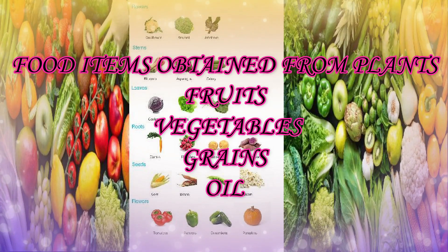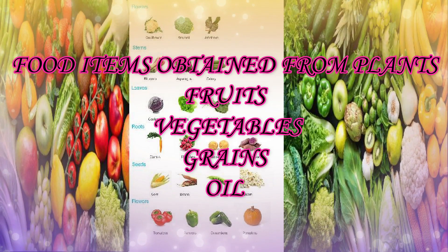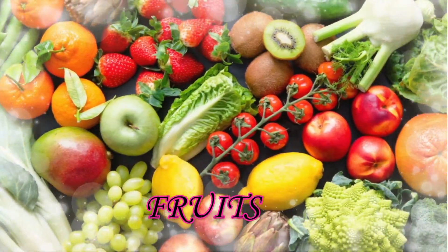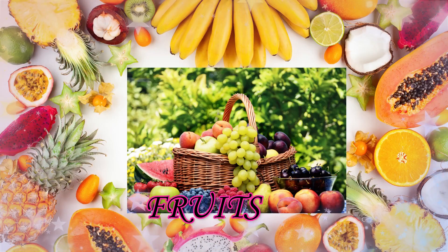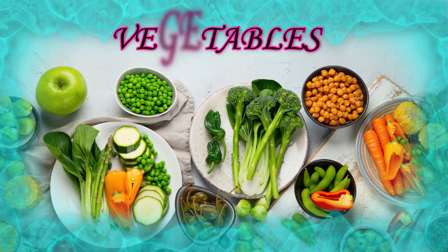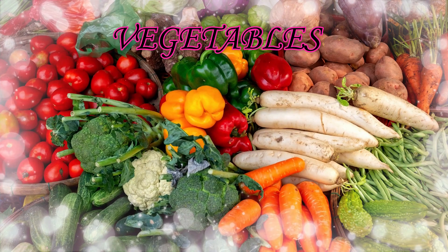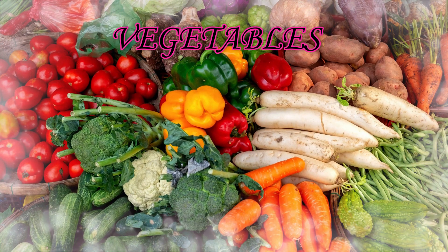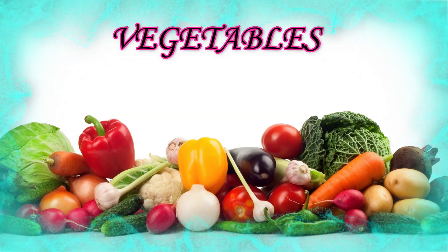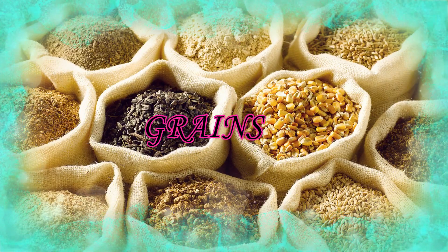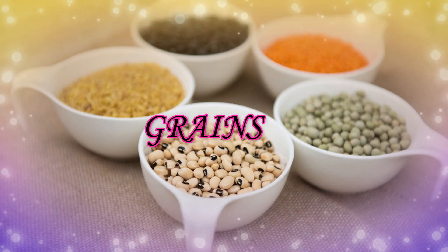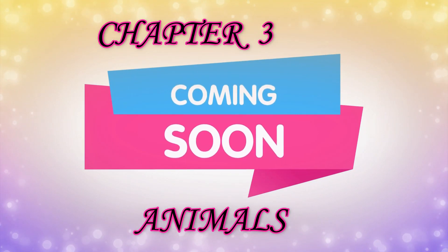There are many food items obtained from plants. Plants give us fruits, vegetables, and grains. Fruits are the part of a plant that we eat — for example apple, watermelon, pineapple, and guava. Vegetables are the eatable part of a plant that can be eaten raw or after cooking — for example potato, onion, brinjal, capsicum, and cauliflower. Grains can be eaten only after cooking — for example rice, wheat, pulses, and maize.